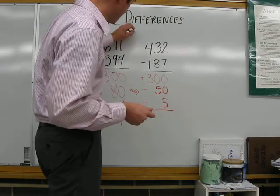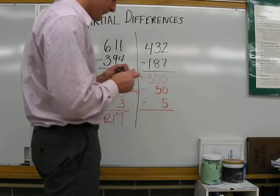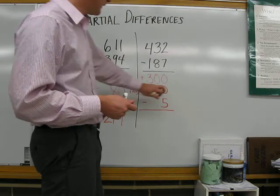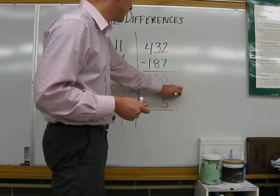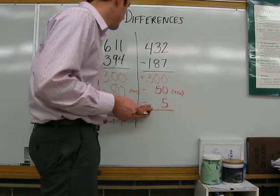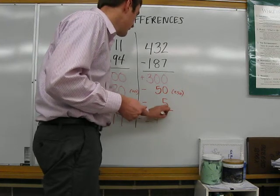Let's figure out an answer. We'll draw a line here so we don't confuse the two. 300 minus 50 is 250. 250 minus 5 is 245.